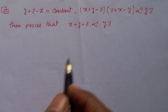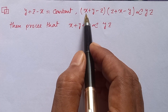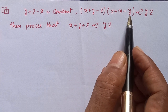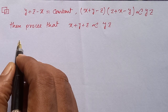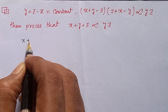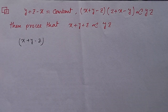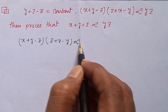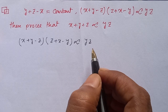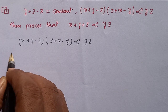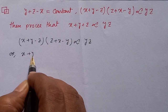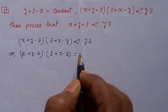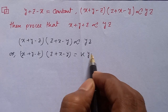We will prove that x plus y minus z into z plus x minus y varies as yz. So we write x plus y minus z into z plus x minus y equals k into yz.